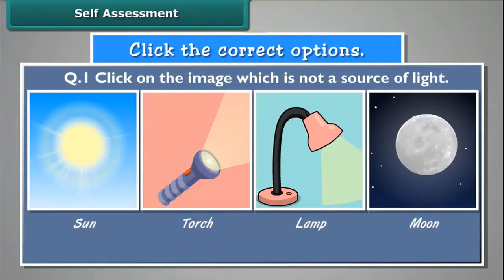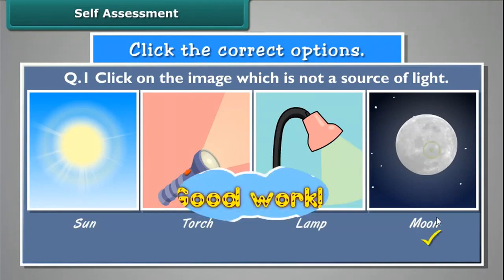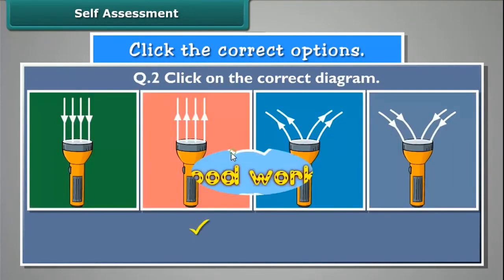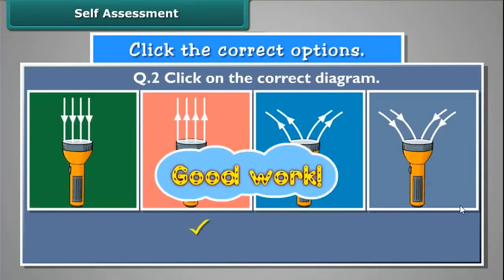Self-assessment. Click on the image which is not a source of light. Good work! Click on the correct diagram. Good work!